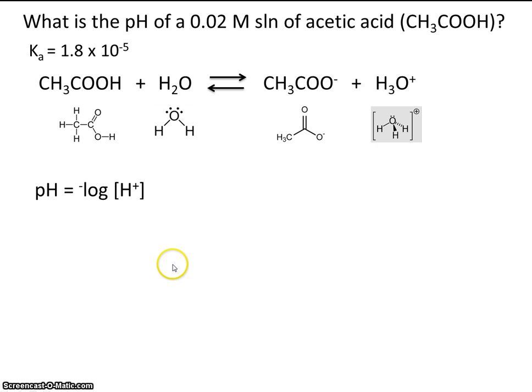So we have a formula for pH. It's the negative log of hydrogen ion concentration. So all we need to know is the concentration at equilibrium of this hydronium ion, and then we can plug it in right here and take the negative log, and that will be our final answer.